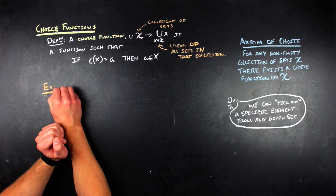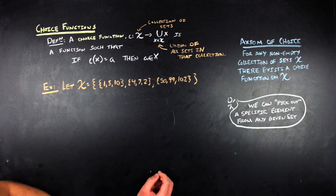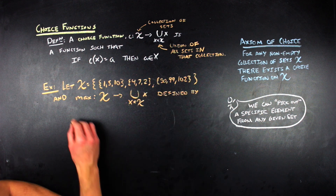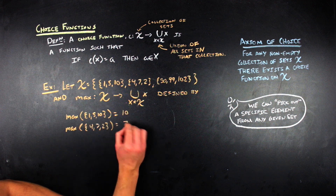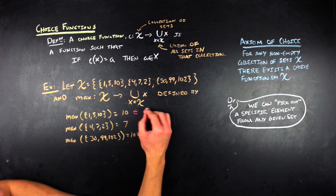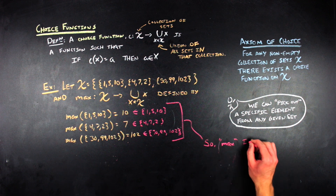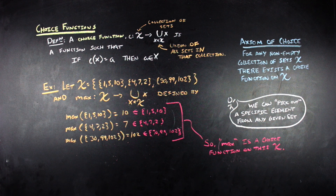Now that we've gone over what a choice function and the axiom of choice are, it's a good opportunity to give an example. Say you have a collection of three sets, each containing three numbers, and you define a function called max on this collection such that when you give max a set from the collection it returns the largest element of that set. We can conclude that max is a choice function on this collection, because each output of max is an element of the set it came from.